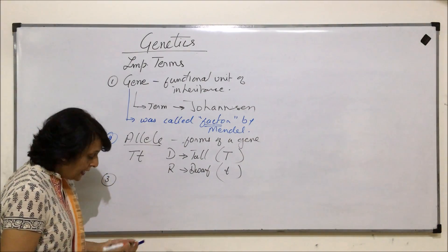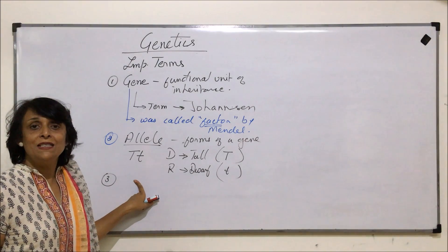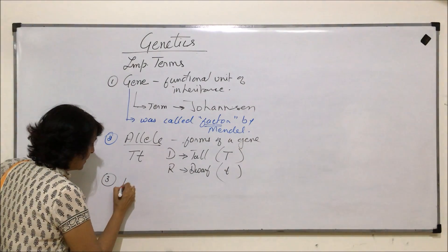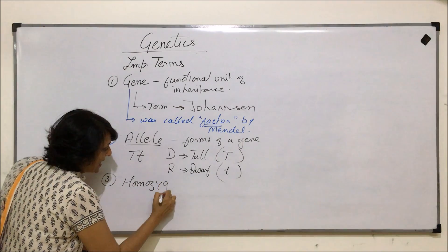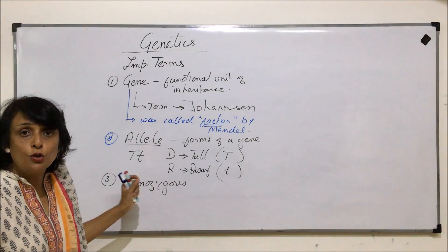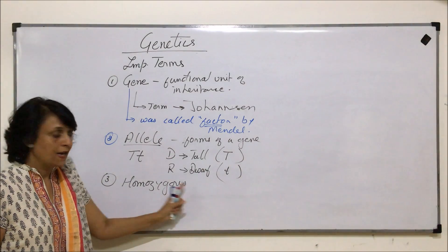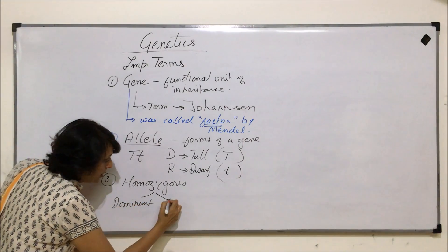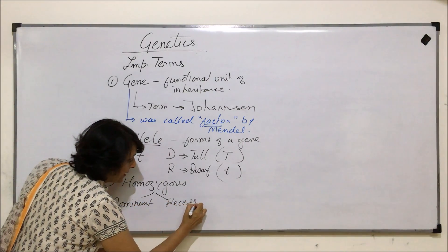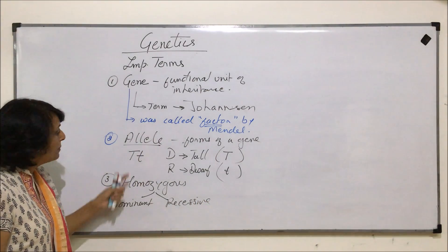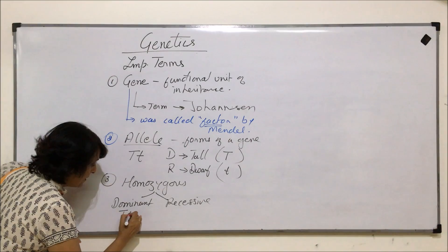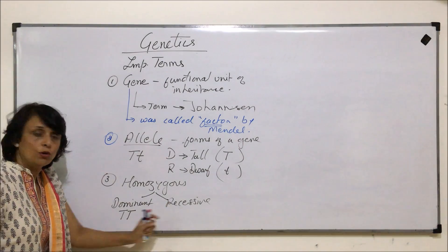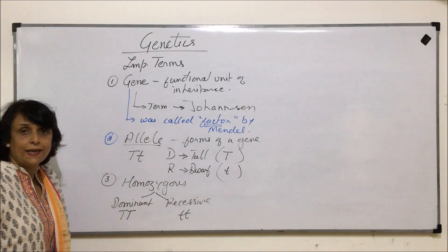If these two genes are of the same type — that means both are dominant or both are recessive — the condition is known as homozygous. Homozygous can be dominant or recessive. When talking of homozygous dominant, we write two capital T's. Homozygous recessive is written as two lowercase t's.